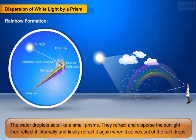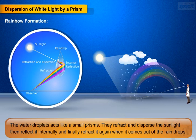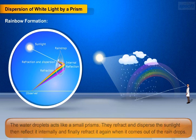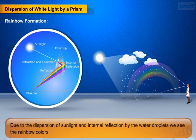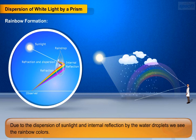They refract and disperse the sunlight, then reflect it internally, and finally refract it again when it comes out of the raindrops. Due to the dispersion of sunlight and internal reflection by the water droplets, we see the rainbow colors.